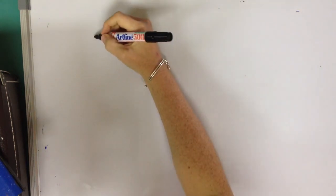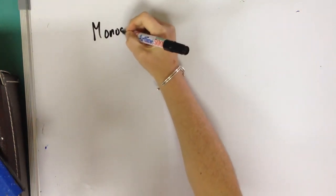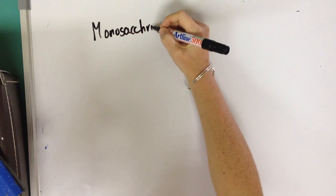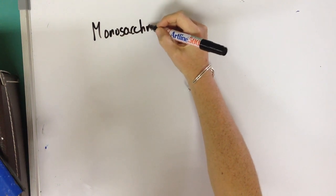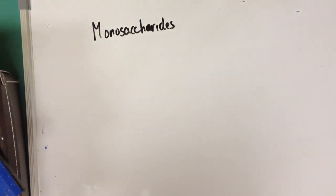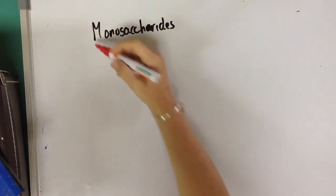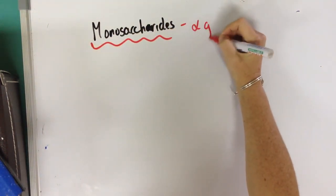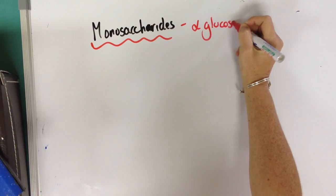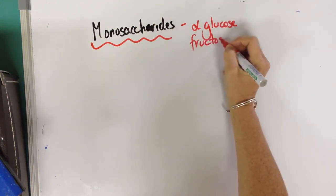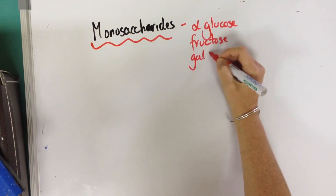Let's look at the monosaccharides in detail. Quick reminders about which they are. We've got alpha glucose, fructose, and galactose.